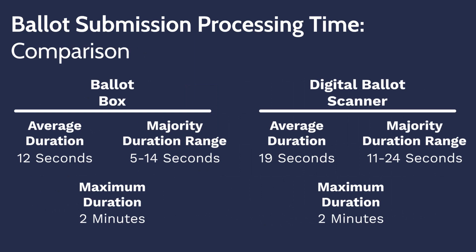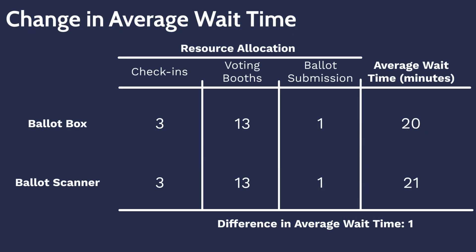The differences in these processes may indicate that the ballot scanning step takes longer in general than the paper ballot box submission. This difference in processing time may require an adjusted resource allocation to reduce delays. Simulating the voting process with a ballot scanner in place of a ballot box indicates that voter wait times predominantly stay the same.